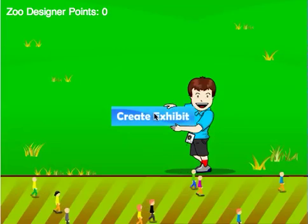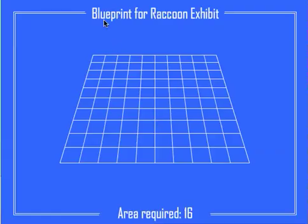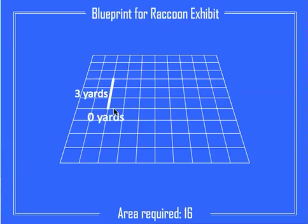Click create exhibit. I have to make a raccoon exhibit with an area of 16. I go to my stage and drag and drop until I have an enclosure with an area of 16. To make an area of 16 I have to have a base and height of 4, or a base of 8 and a height of 2.